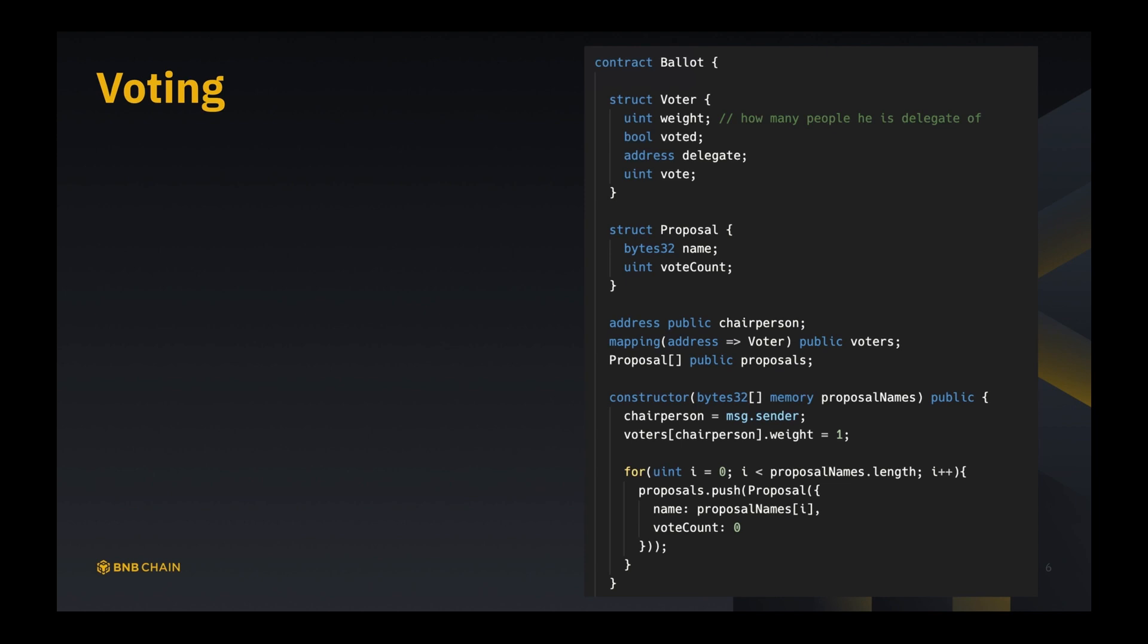Then for a single voter he has two options. One is that he directly votes to a proposal. The second is to pick a delegate, and that person is going to vote for him. So whoever that person votes means that the person who picked him as delegate also votes to that proposal.